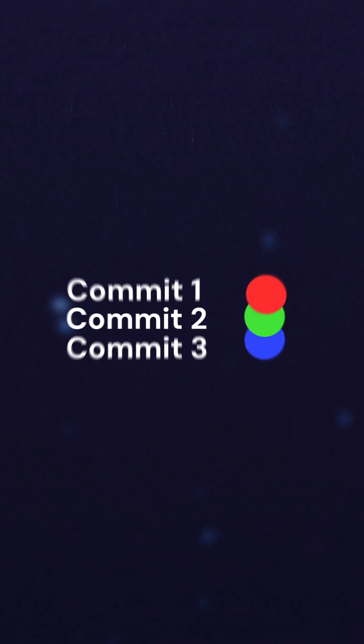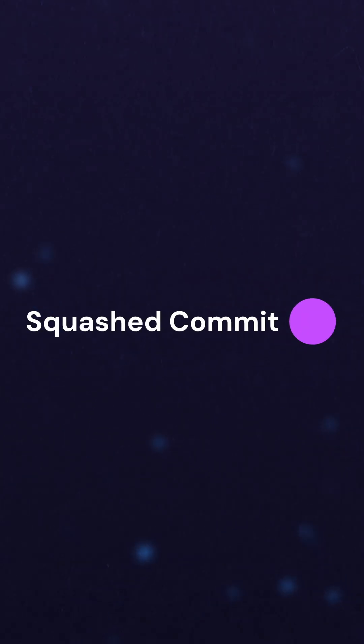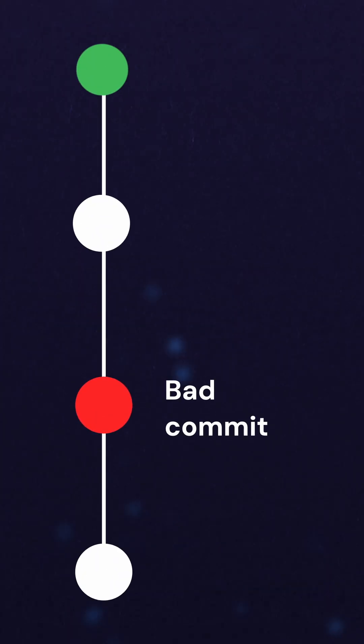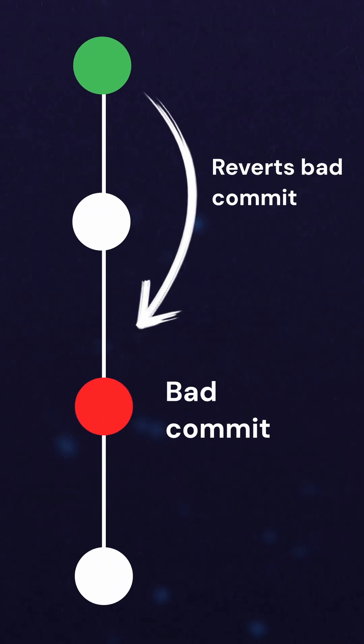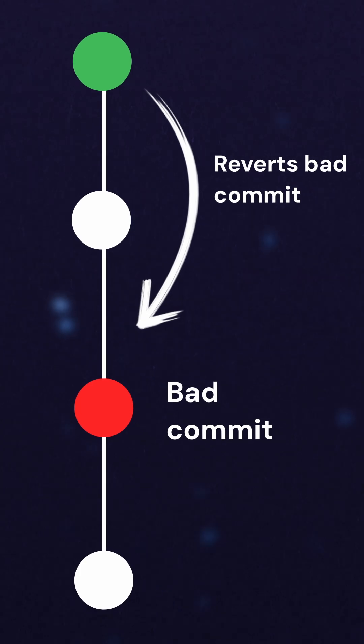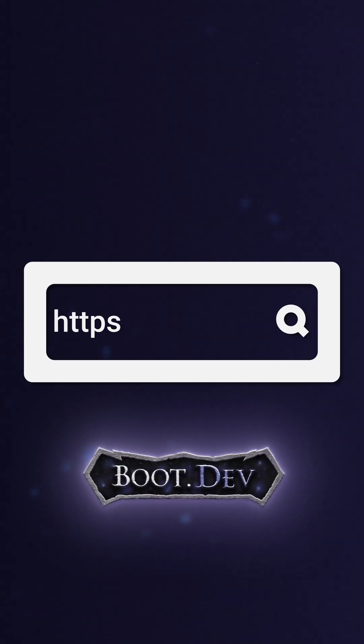Commits can be squashed into one commit, and commit messages can be edited. Also, Git commits can be reverted, just in case they don't want terrible code. Git is a very complicated piece of software, but the interface and operations are very simple.